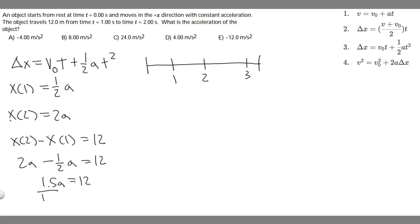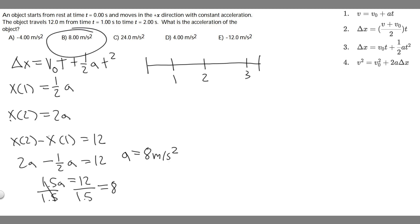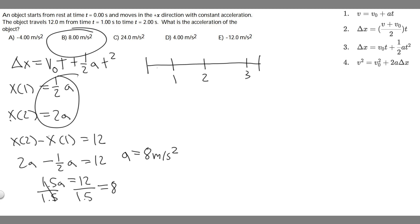Dividing both sides by 1.5 gives us the acceleration. 12 divided by 1.5 is 8, so a equals 8 meters per second squared. Looking at the answer choices, that corresponds to option B. We solved it by finding how far the object traveled at t equals 2 and t equals 1, subtracting to get the 12-meter interval, and solving for a.